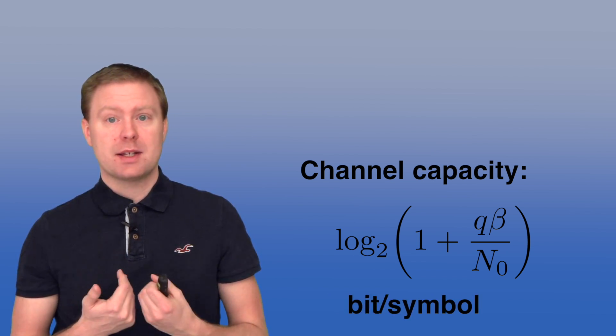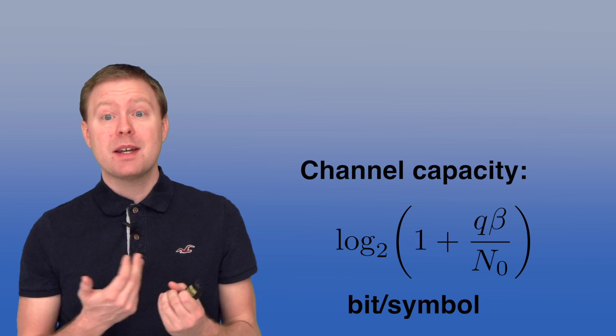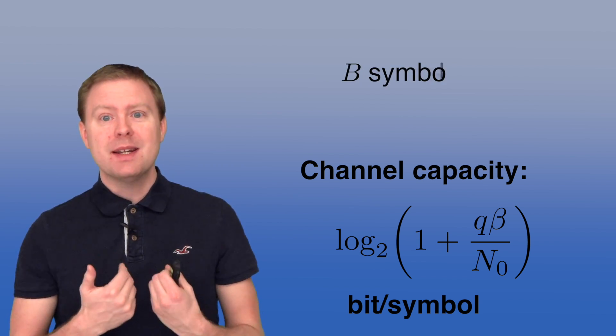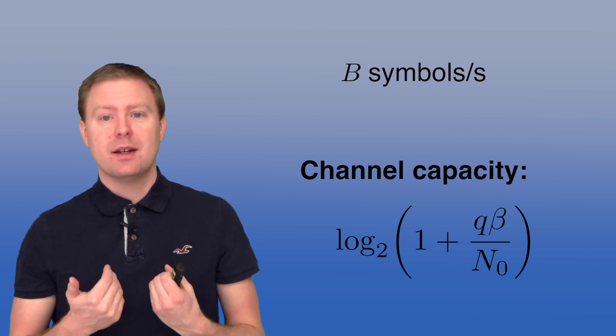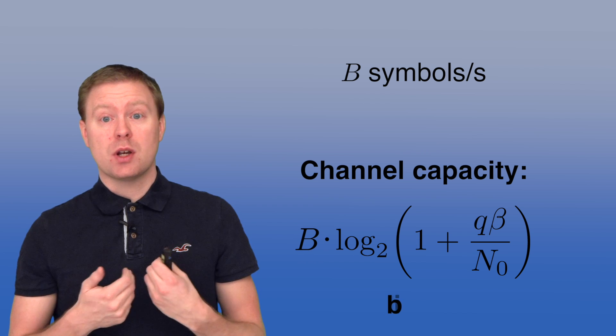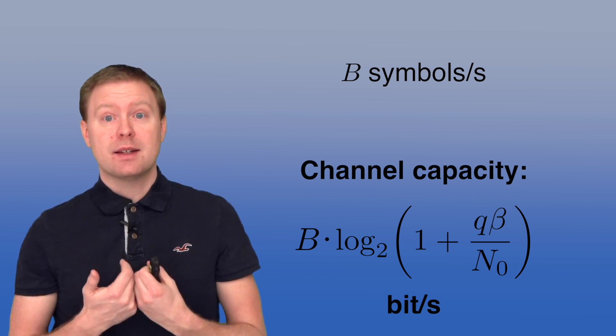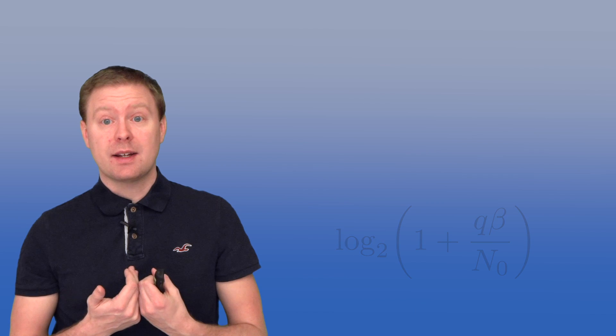But how many symbols do we have per second? We have B complex symbols per second. So we can multiply this whole expression by B and instead get something that is measured in bits per second.